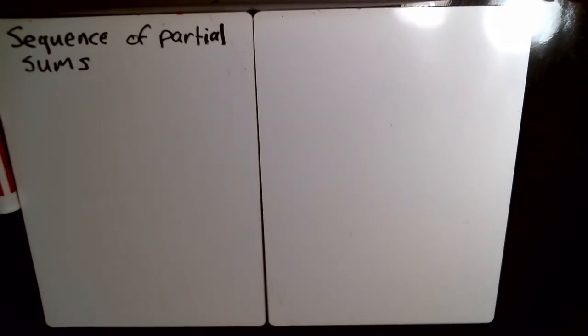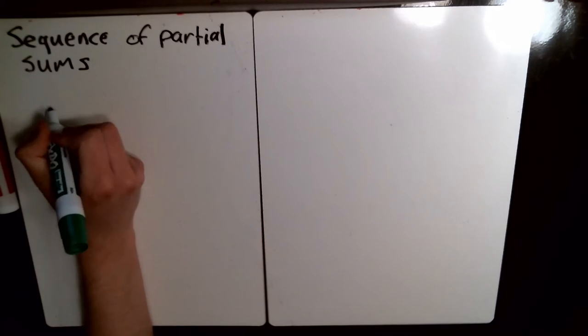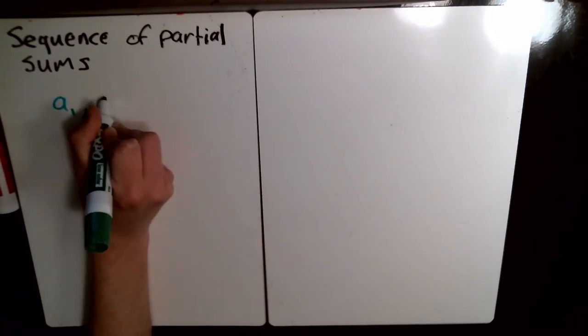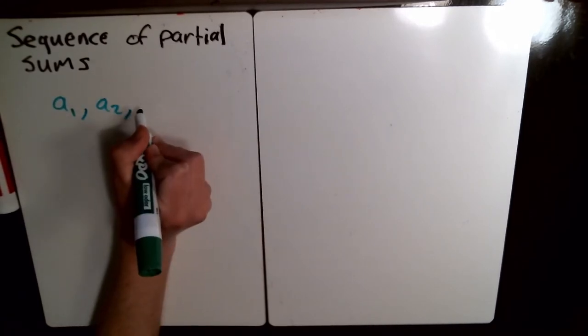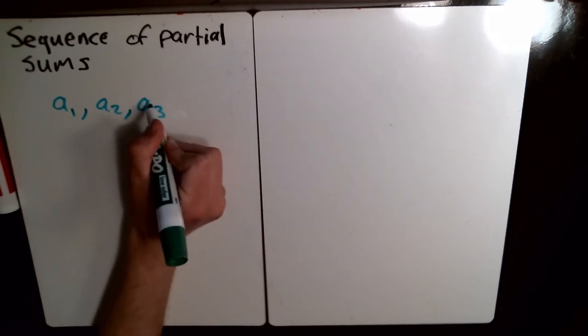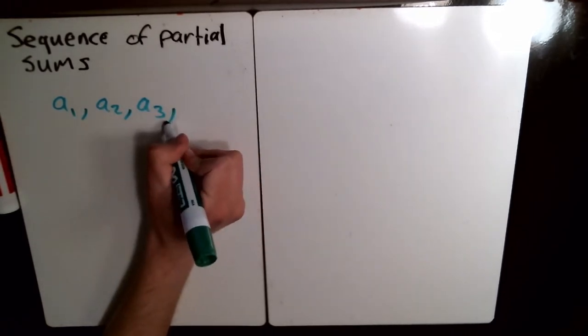We're going to be looking at sequence of partial sums. And that's essentially how you do this: you're given a sequence, just any sequence that you like. So, let's say that I have, I'll just do this in generality first, but let's say we've got this sequence a sub 1, a sub 2, a sub 3. These are just, they can represent any numbers you want.